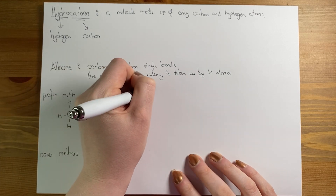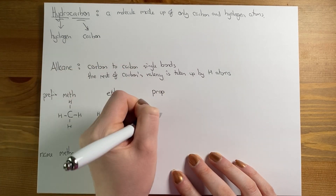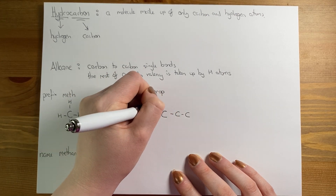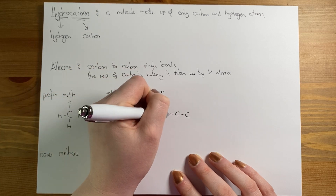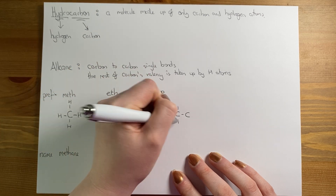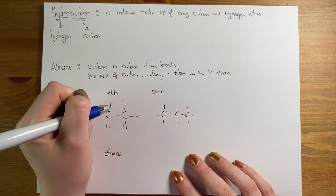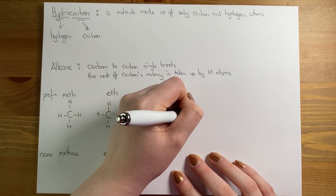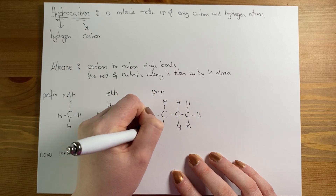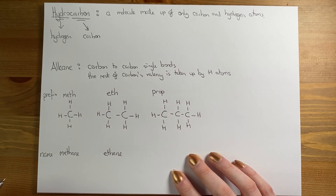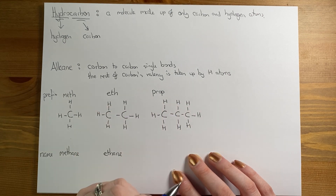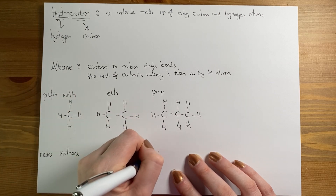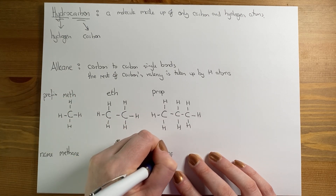Moving on to propane, we have three carbons. The end carbons each already have one bond, so they need three more hydrogens. The middle carbon already has two bonds, so it needs two more. We fill all of the valencies using hydrogen atoms — all capital C's, all capital H's, all bonds drawn in. The name of this is propane.